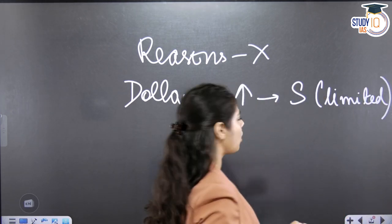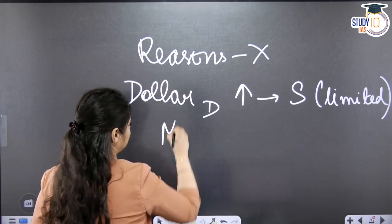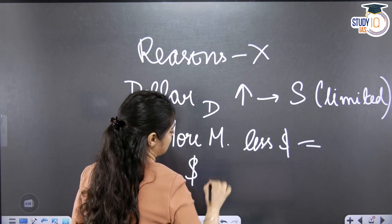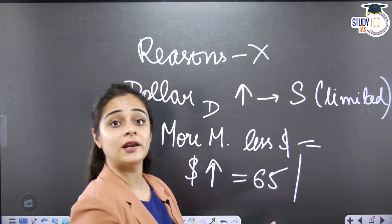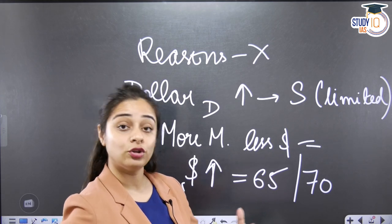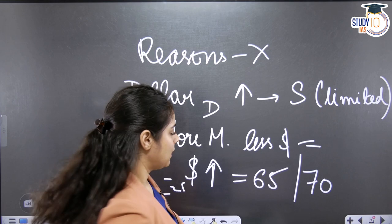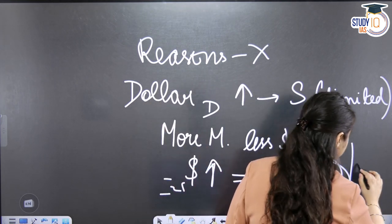If for some reason the demand for the dollar increases, with limited supply there will be more money chasing fewer dollars available in the market, so the price of the dollar will go up. If earlier you had to take out 65 rupees to buy one unit of dollar, now because demand is so high, the dollar will be more expensive — just like with potatoes and onions. If demand for potatoes increases and supply stays the same, the price goes from 20 rupees per kilo to 80 rupees per kilo. Same with the dollar — if demand increases, 1 dollar that cost 65 rupees may now cost 70 or even 75 rupees.